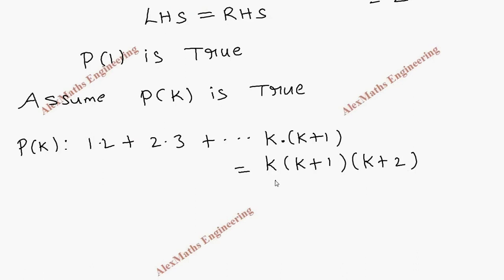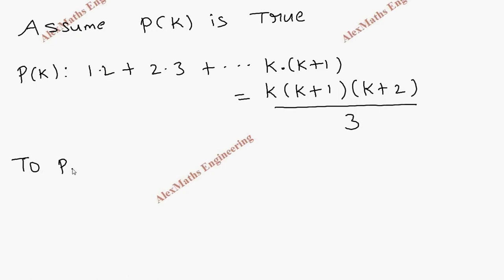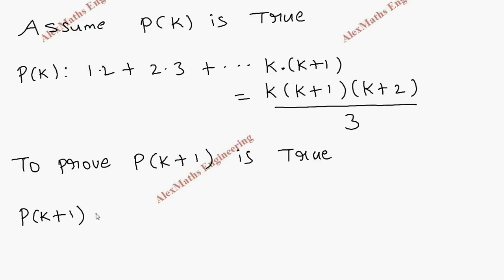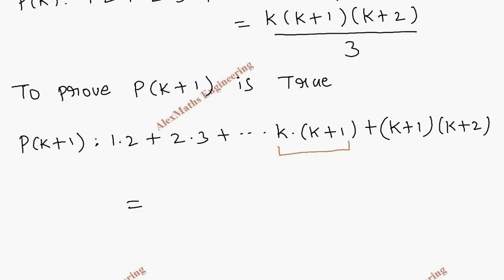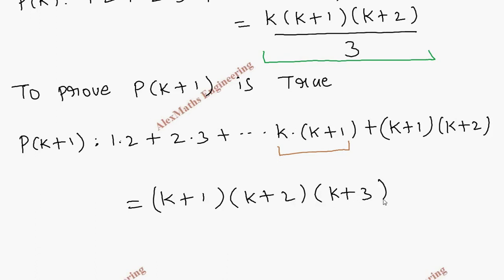Now we need to prove P(k+1) is true. The P(k+1) expression is: 1·2 + 2·3 + ... + k(k+1) + (k+1)(k+2), and on the right hand side, replacing n with k+1, we get (k+1)(k+2)(k+3) / 3.